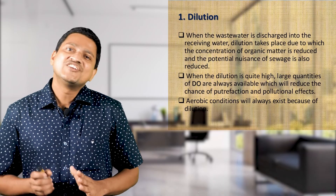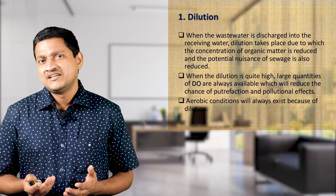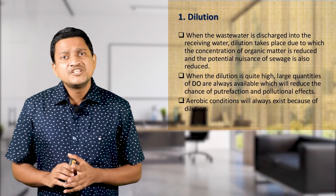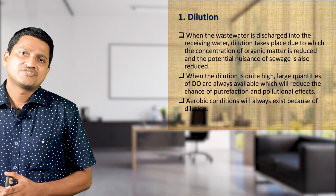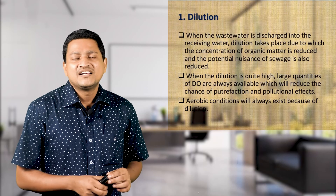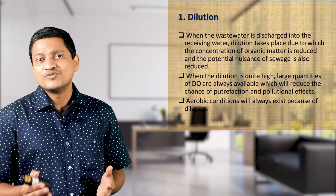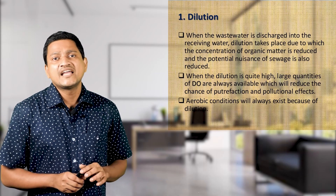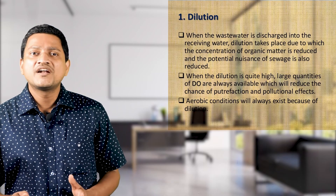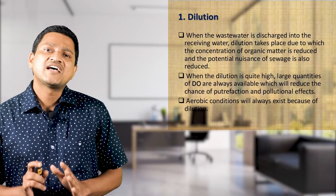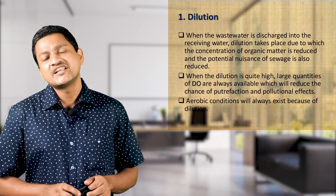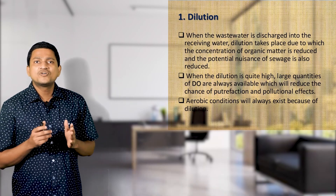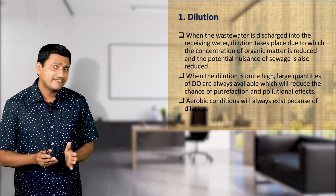The first action is dilution. When wastewater is discharged into the receiving water, dilution takes place, reducing the concentration of organic matter and the potential nuisance of sewage. As they say, dilution is a solution to pollution. When dilution is quite high, large quantities of dissolved oxygen are always available, which reduces the chance of putrefaction and the pollutional effect. Aerobic conditions will always exist because of dilution.